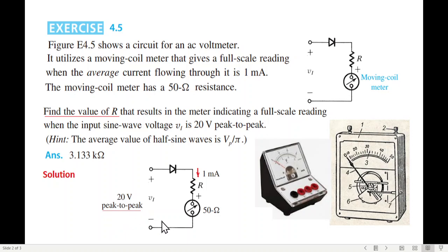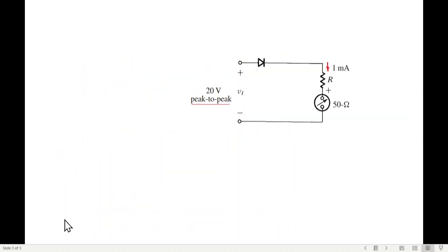20 volts peak to peak. Now we have peak to peak signal, 20 volts peak to peak. Now we rectify by a single diode. So it is half wave rectifier. So the signal is half wave rectified.